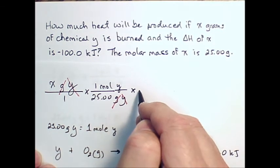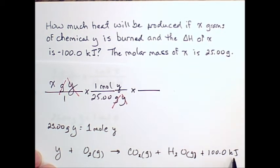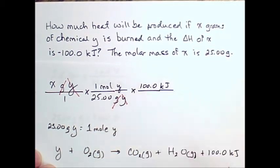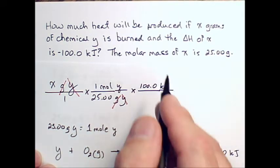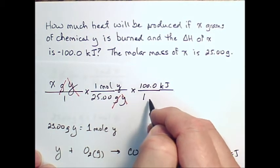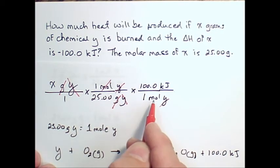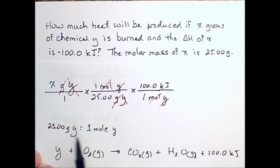So, what's going to happen is we're going to take this 100 kilojoules of energy, and that is per one mole of this chemical species we're burning. One mole of Y. We can cancel moles of Y. And when we finish,